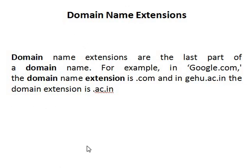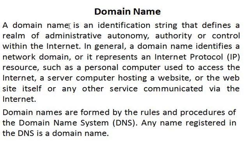Domain name extensions are the last part of a domain name. For example, in google.com the domain extension is dot com, and in gehu.ac.in the domain extension is dot ac dot in. A domain name is an identification string that defines a realm of administrative autonomy or company authority, and the extension is dot com, dot org, and so on. So the basics for today are: domain name, domain extension, internet, website, intranet, and extranet. Thank you for the day.